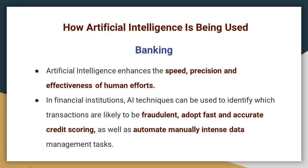Banks are also places where artificial intelligence has found very useful applications. Artificial intelligence enhances the speed, precision and effectiveness of human efforts such as processing loan applications or dispensing money at the counter. In financial institutions, AI techniques can be used to identify which transactions are likely to be fraudulent, adopt fast and accurate credit scoring, as well as automate manually intensive data management tasks.